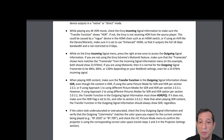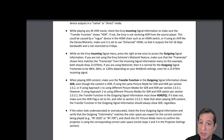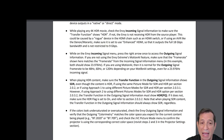Next, when playing any 4K HDR movie, check the Envy incoming signal information to make sure the transfer function shows HDR. If it doesn't, the Envy is not receiving HDR from the source player. This could be caused by a rogue device in the HDMI chain, such as an HDMI switch, or if using an AVR like a Denon or Marantz, make sure it's set to enhanced HDMI so it outputs the full 18 gigabits per second bandwidth.